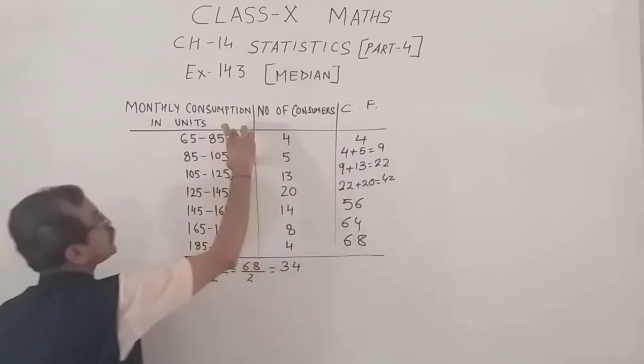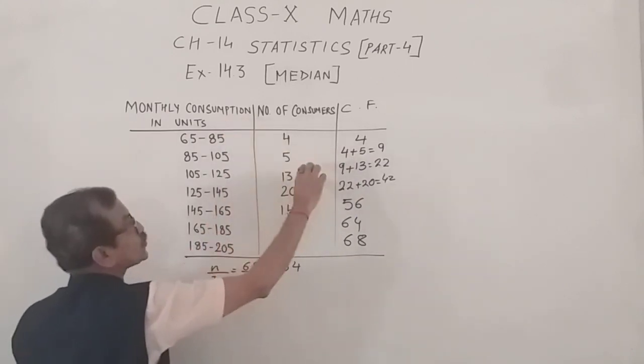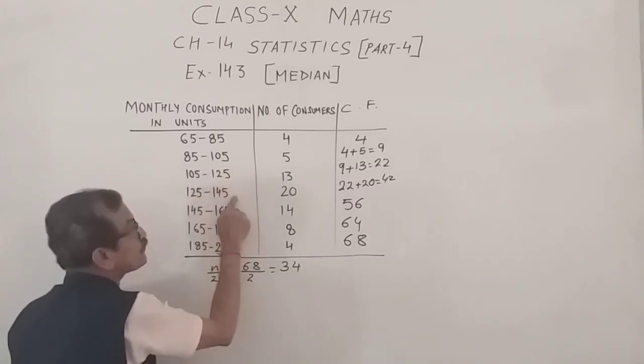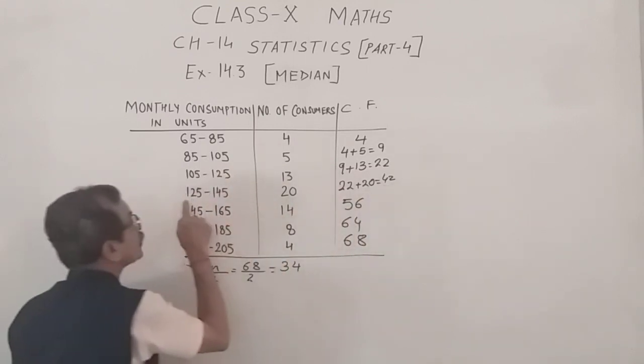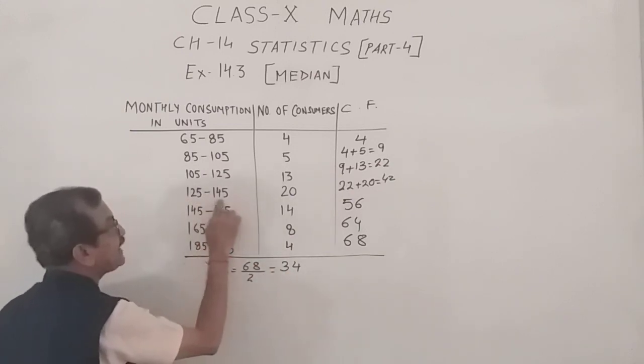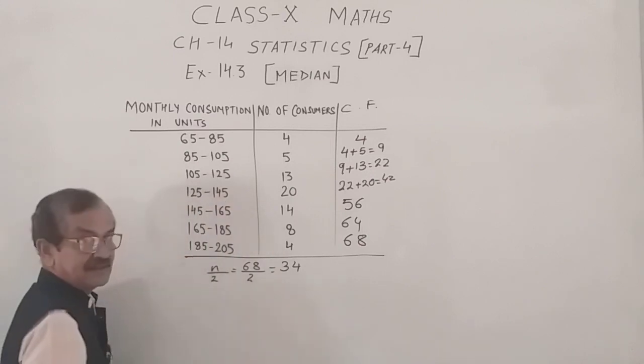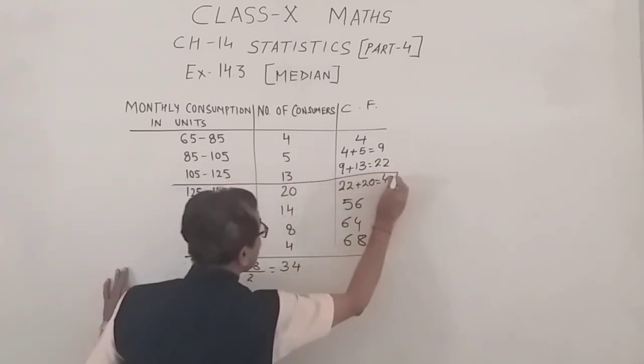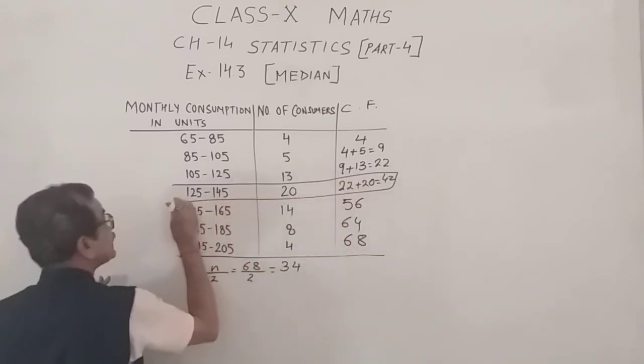That means, a total of 9 terms belong to this class. And 22 terms belong to this class. The 23rd to the 42 terms belong to this class. Clearly, the 34th term lies in between this class. That means, this is our median class.